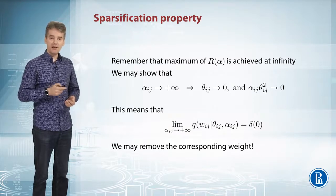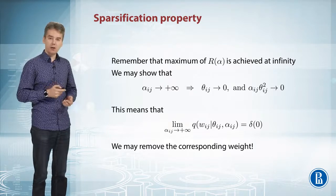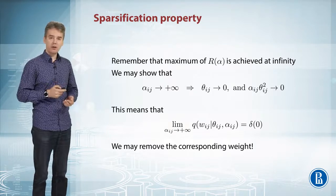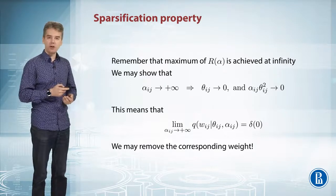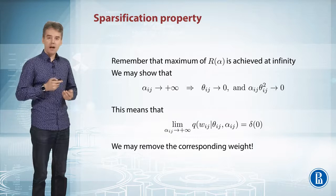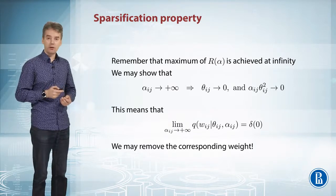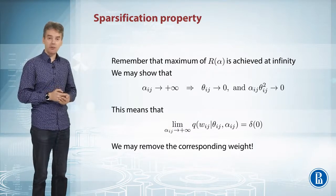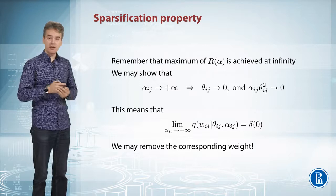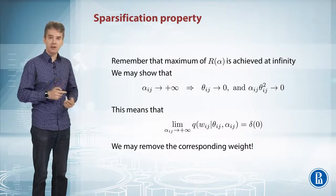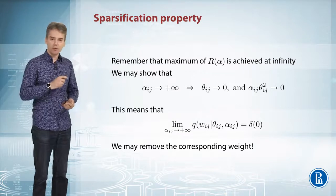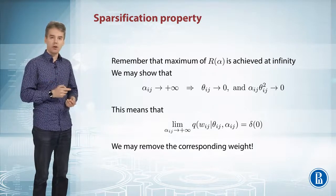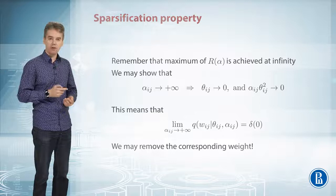This means that our variational approximation q becomes a delta function when αi goes to plus infinity — a delta function centered at zero. And a delta function centered at zero means that the corresponding weight w is exactly zero. This means we may simply skip this connection, simply remove the corresponding weight from our neural network, thus effectively sparsifying it.